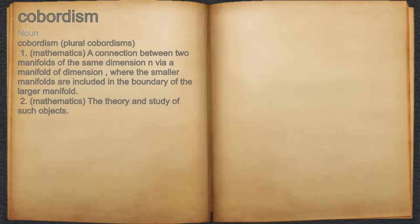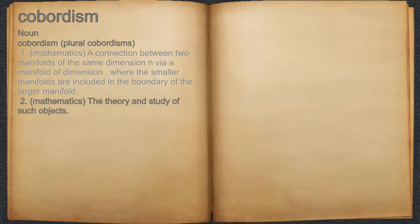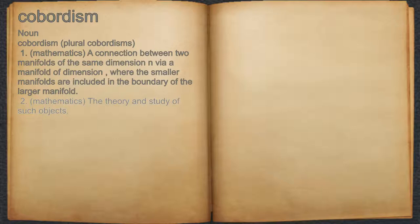Cobordism. Noun. 1. Mathematics: a connection between two manifolds of the same dimension, by a manifold of higher dimension, where the smaller manifolds are included in the boundary of the larger manifold. 2. Mathematics: the theory and study of such objects.